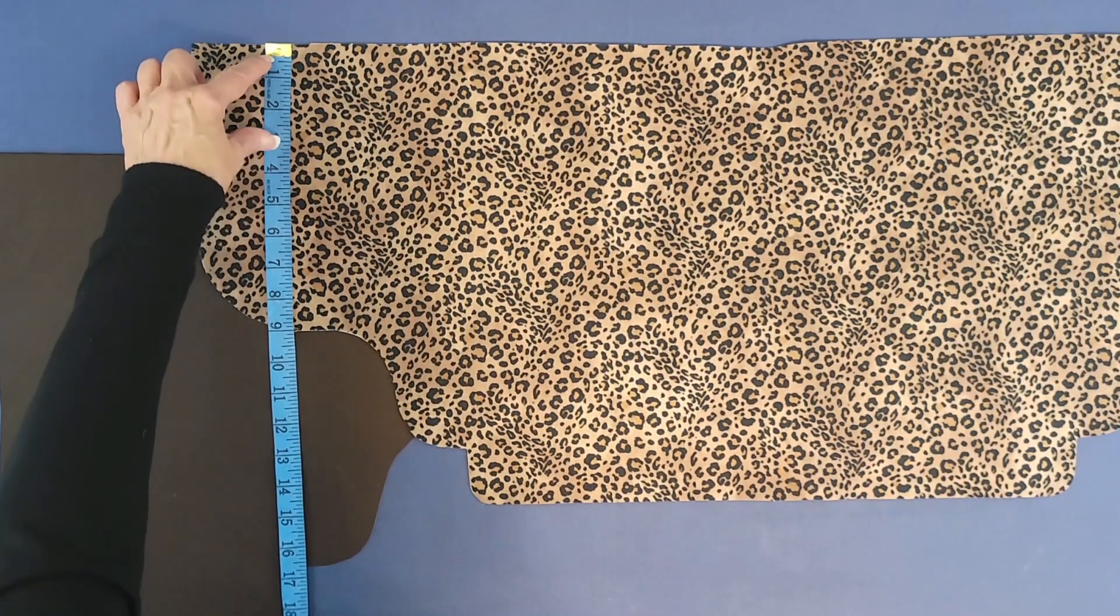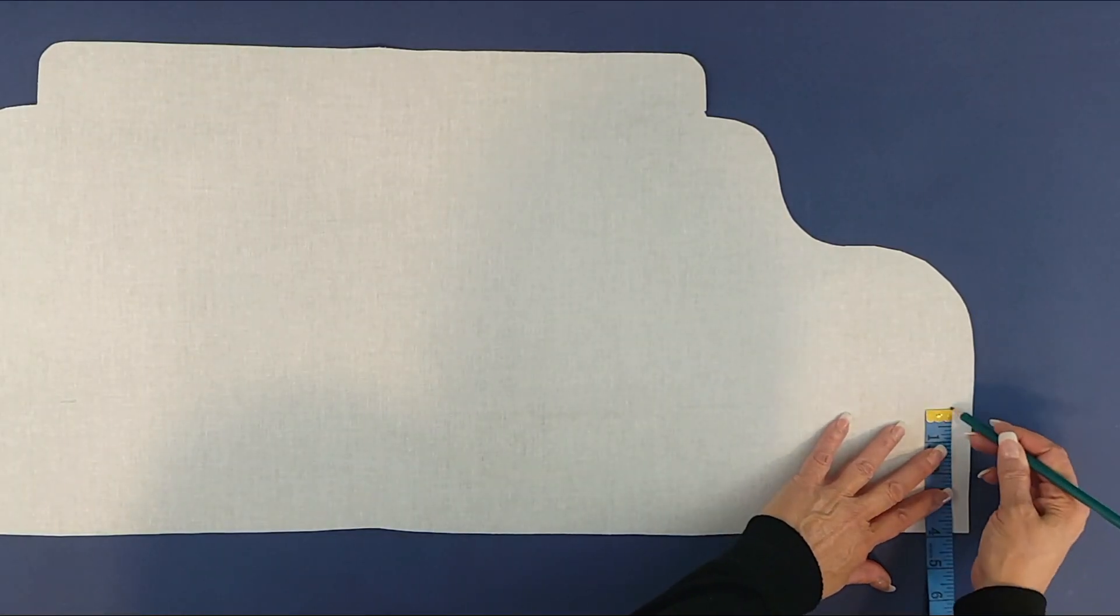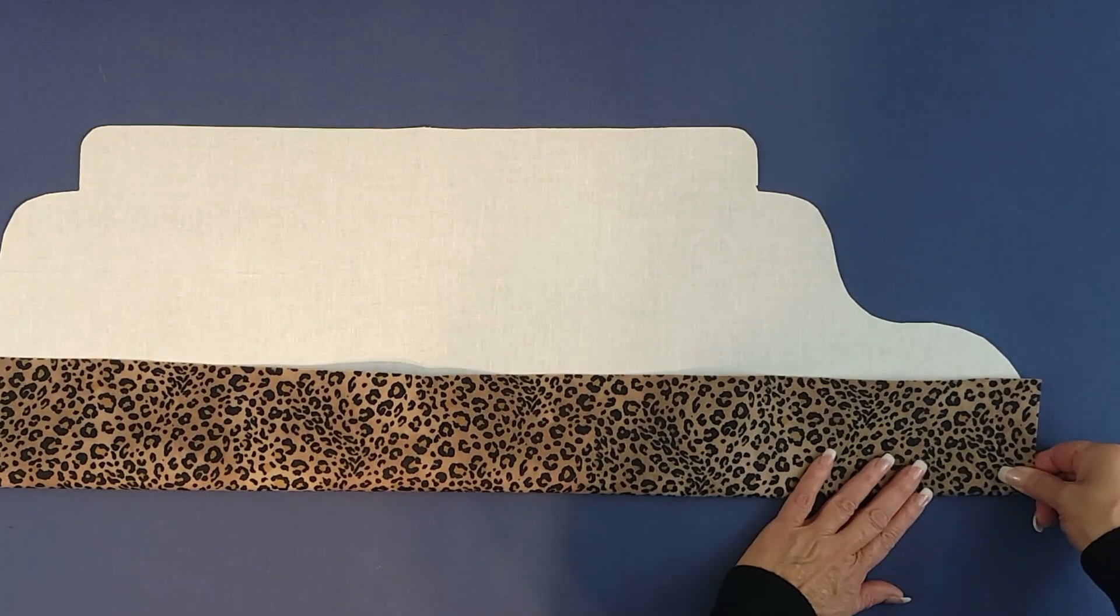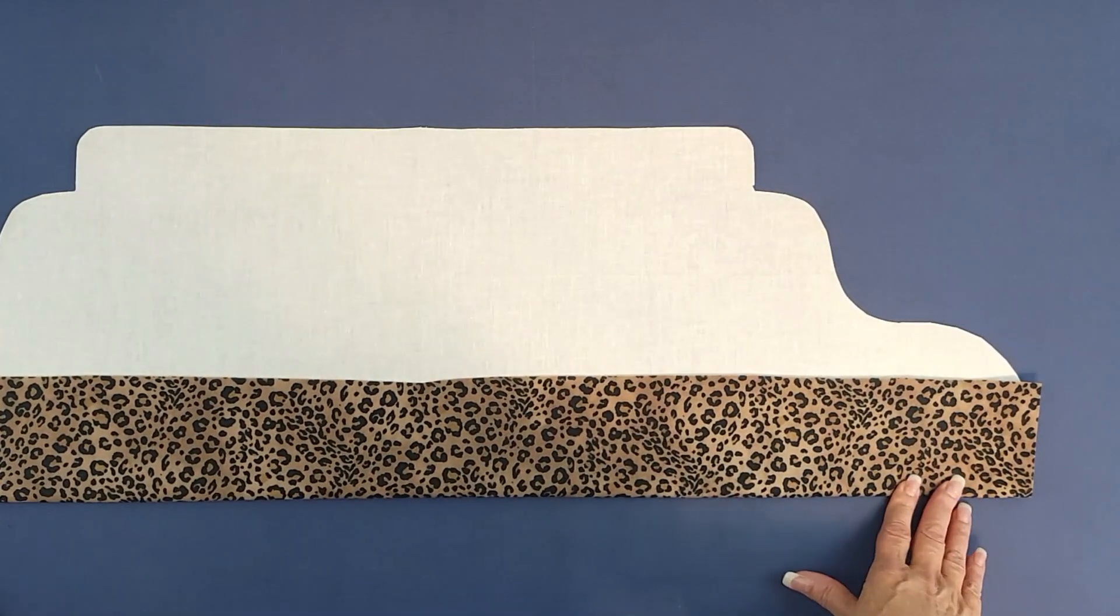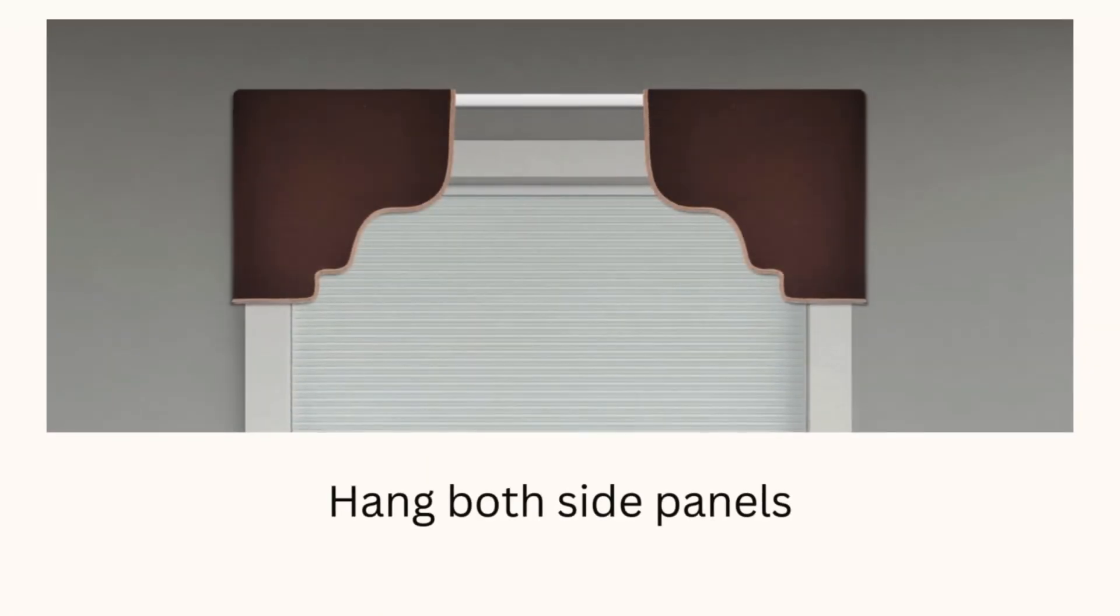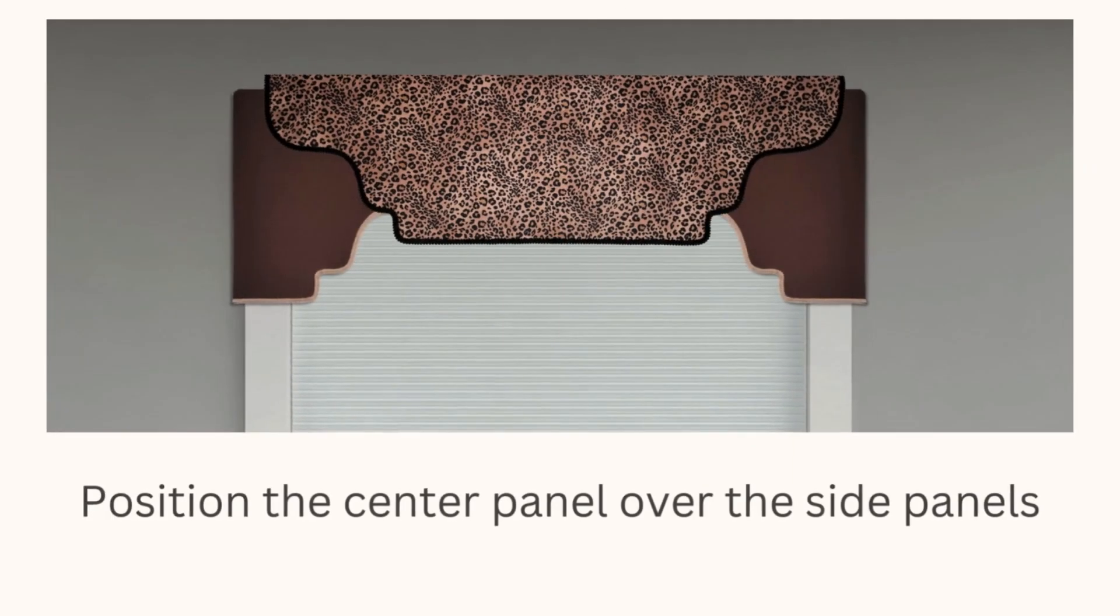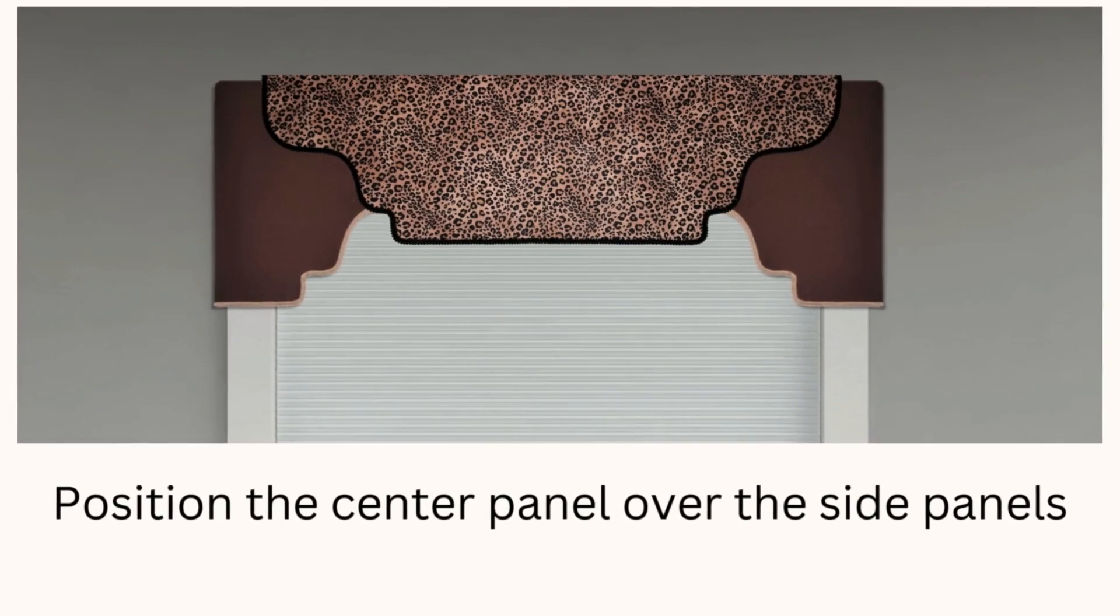This is where you'll fold the fabric to attach fasteners. Measure down and mark your fabric so it's even when you fold across and has proper placement. Run an iron across the fold so you can clearly see the crease. To determine proper placement for your fasteners, hang your side panels, push them against the wall, and position your center panel over them.